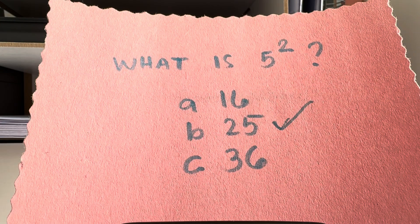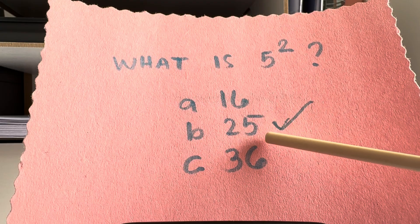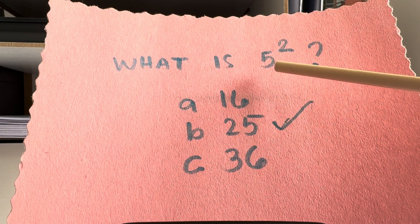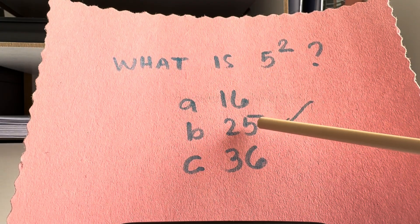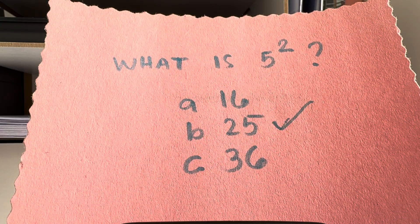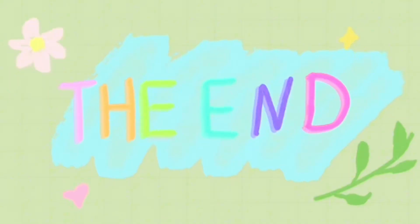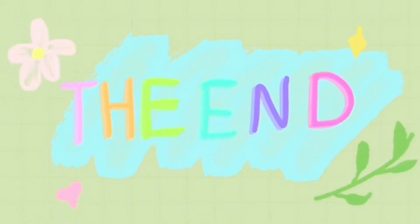And the right answer is letter B, 25. 5 squared is equal to 25. The end.